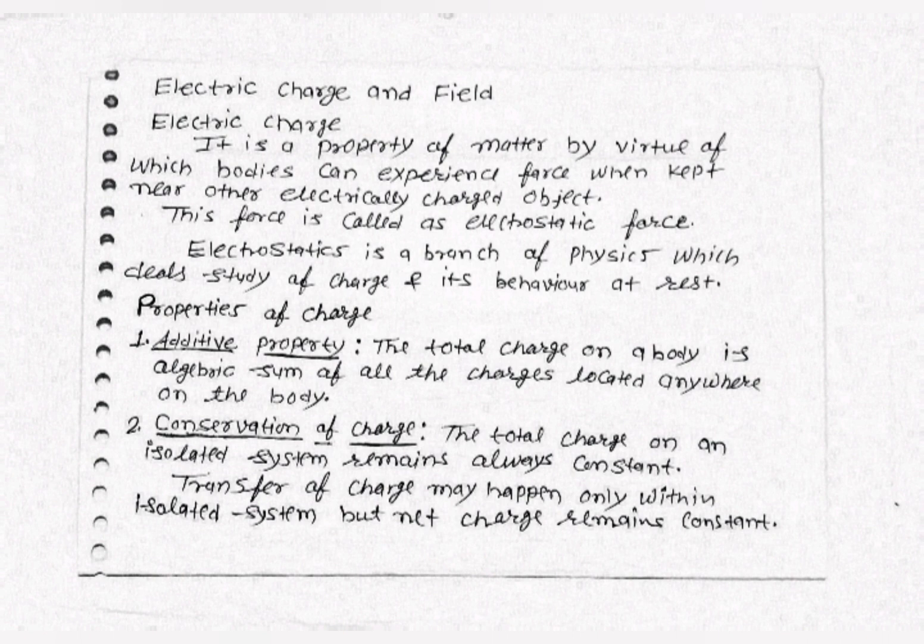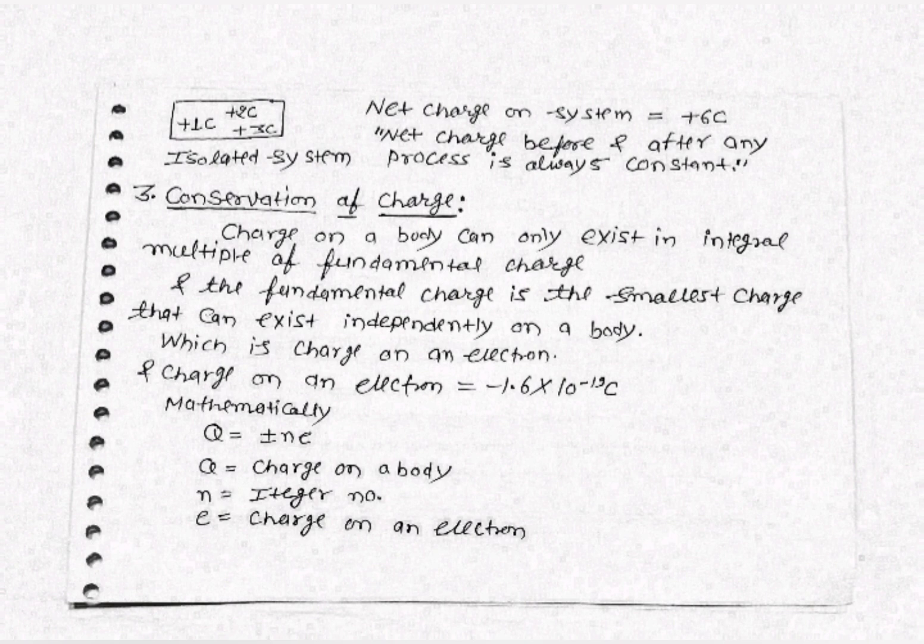The transfer of charge may happen only within an isolated system, but the net charge remains constant. For example, suppose we have an isolated system with three charges: plus one, plus two, and plus three. The net charge on that system is plus six coulombs. When the system is moved, charges may be transferred within it, but the net charge always remains constant.